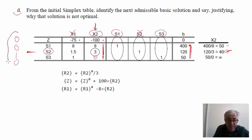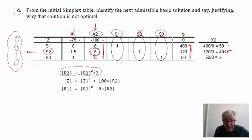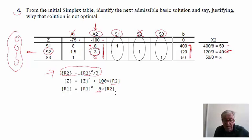Then we use the new row 2 to zero out the other x2 coefficients. For Z, we multiply the new row 2 by 100 (symmetric of −100) and add it to the Z row. Restriction 3 already has 0, so no change is needed there. For restriction 1, we use the symmetric of 8 (i.e., −8) times the new row 2, accumulated with the previous restriction 1 row to get the new restriction 1.